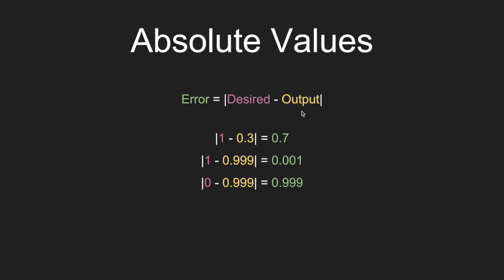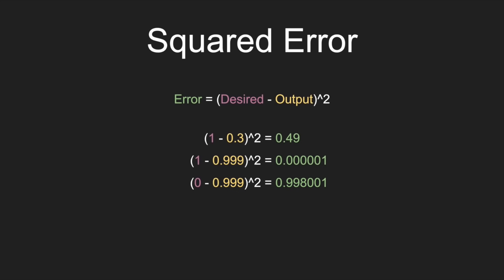I want to briefly talk about one more objective function: squared error. Basically you do the same subtraction, but instead of taking the absolute value you square it. The rationale is that squaring a negative number makes it positive, so it has the same effect as absolute value — all distances are positive — but with the added benefit that it's an actual nice mathematical function that can be manipulated with things like calculus. We're not going to worry about this too much in this video; we'll just be using absolute value error, which will work fairly well.